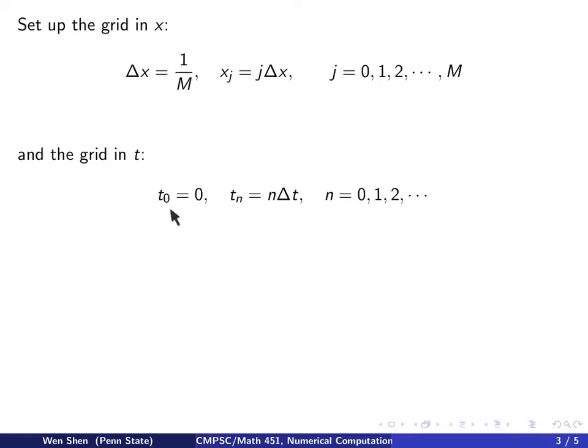t0 will be 0, and tn will be n times delta t for n going from 0, 1, 2, all the way until you reach your final computing time, and then you stop.